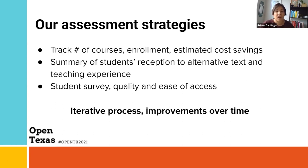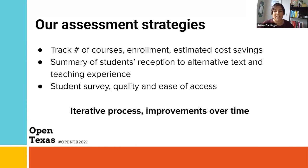Moving beyond just looking at the numbers and cost savings: to complete the program and receive the full award amount, instructors submit a brief report at the end of the semester or year. The bulk of that report includes a narrative summary of students' reception to the alternative text and an evaluation of their teaching experience. Instructors in ATIP are also required to distribute a student survey asking about the quality and ease of access of the alternative text, and other information such as when they first accessed the material and whether they purchased a print copy.